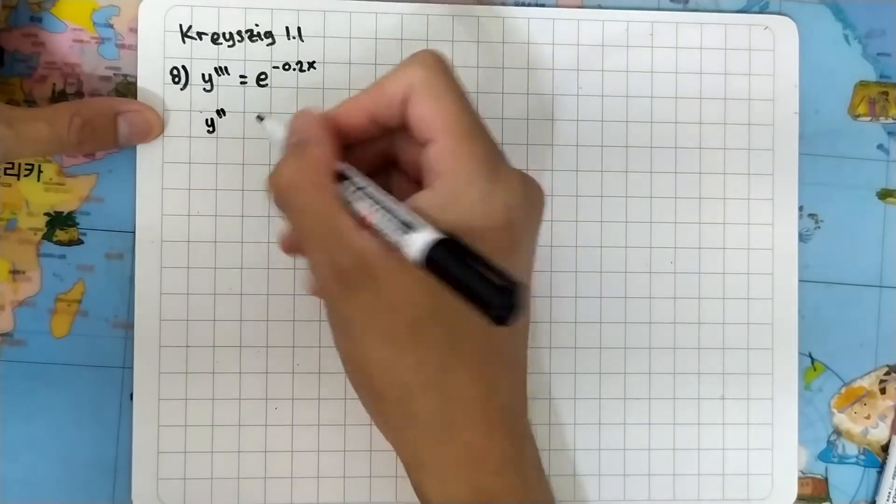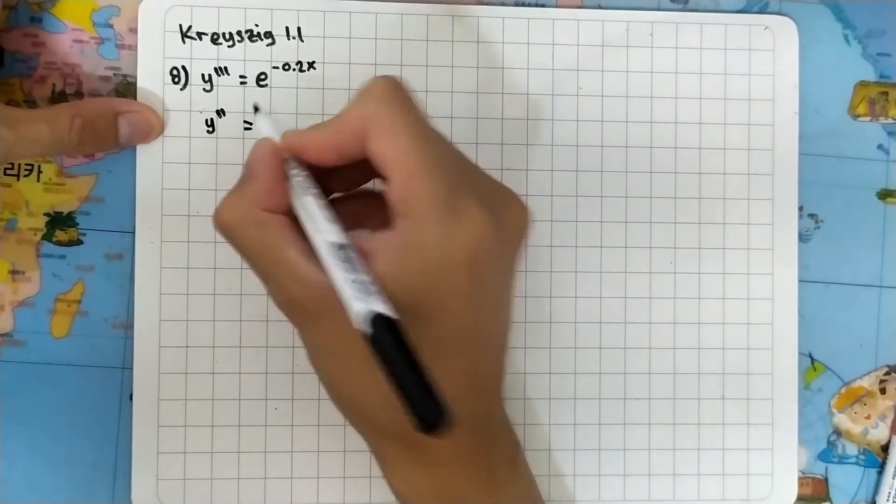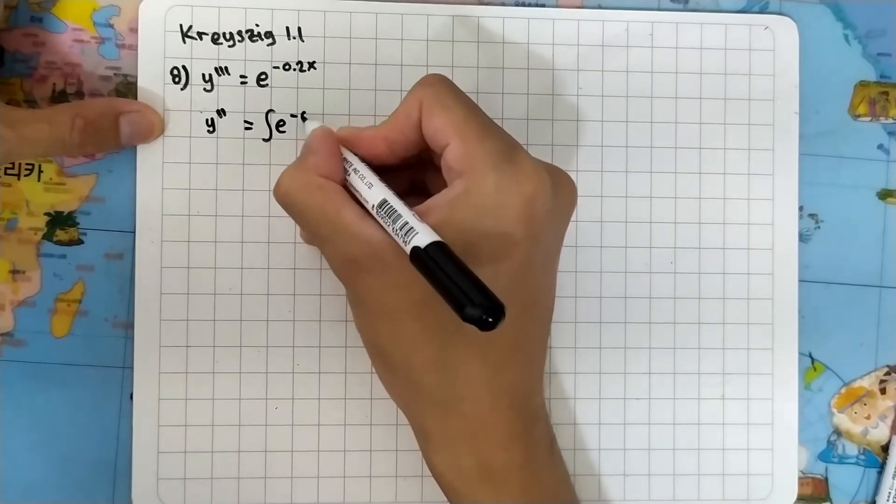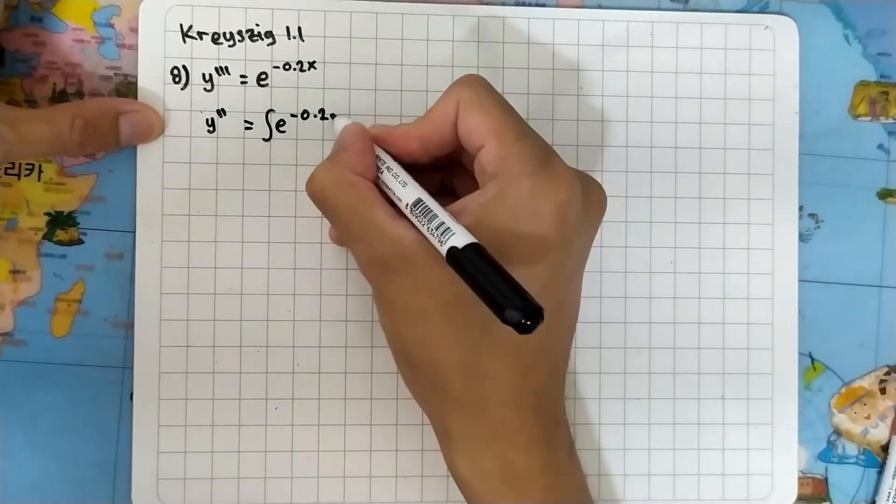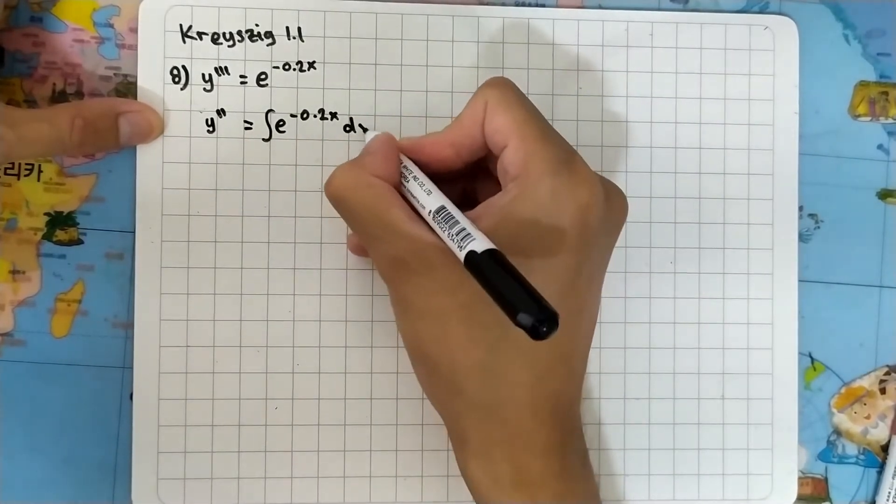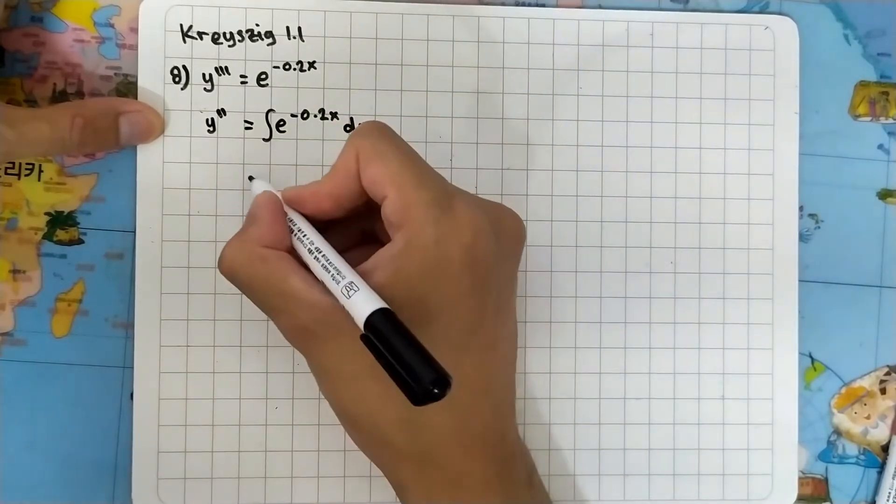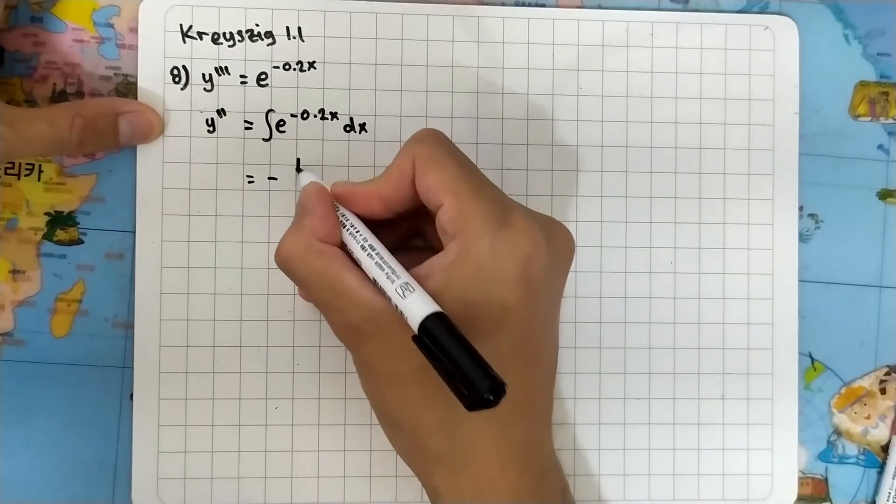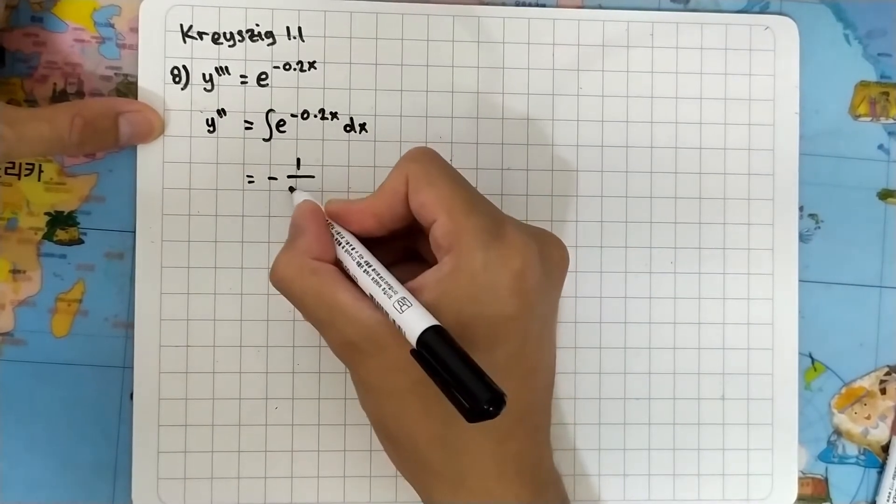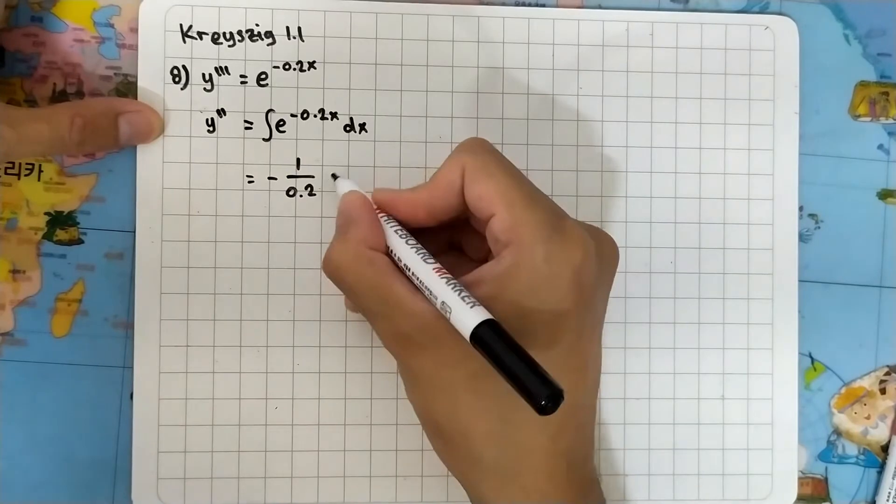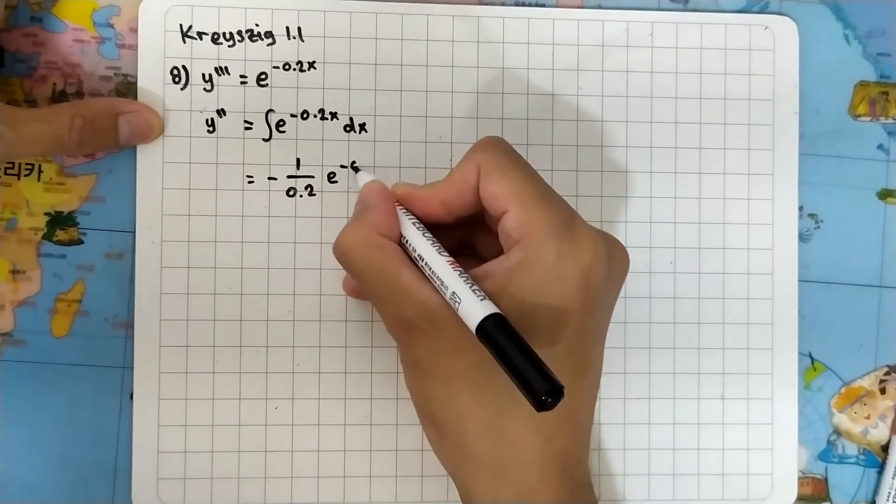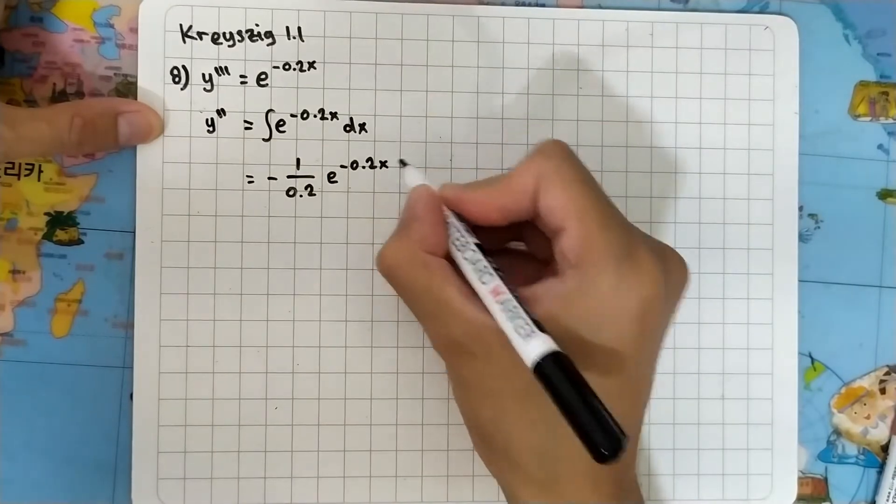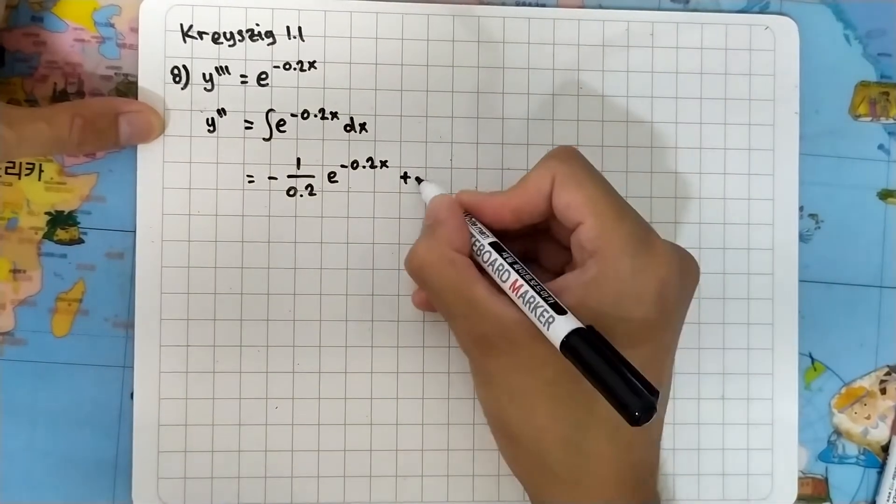And this one will be integral e to the minus 0.2x dx, or we can integrate this. This is minus 1 divided by 0.2 times e to the minus 0.2x plus some constant, let's name it c1.